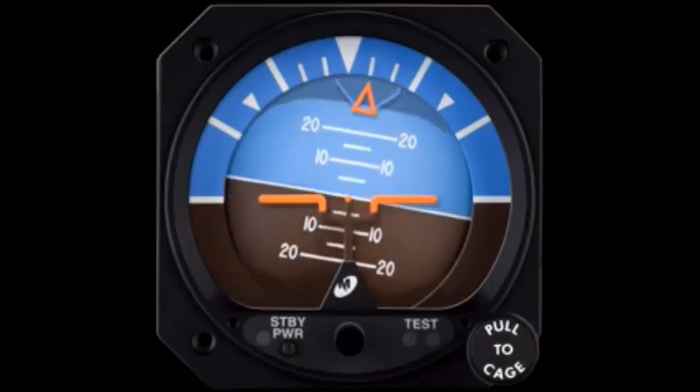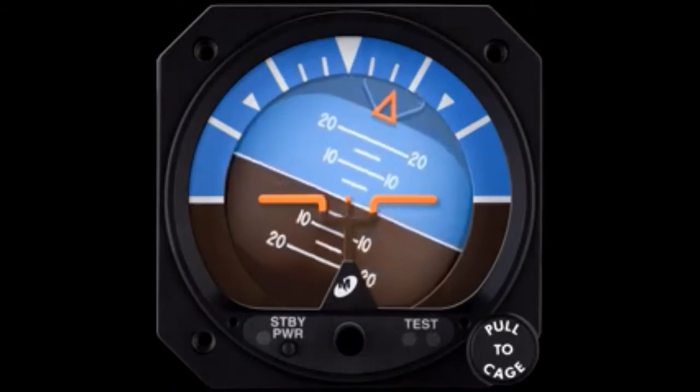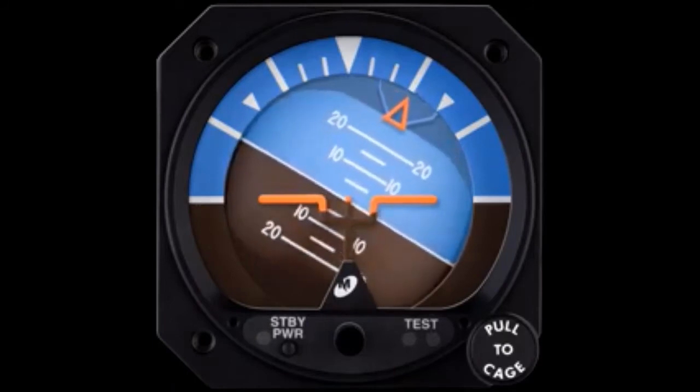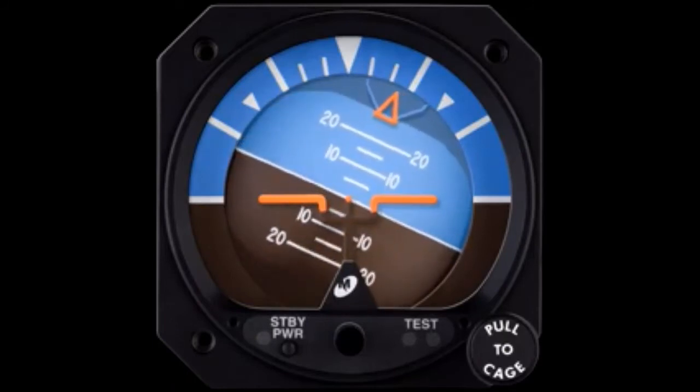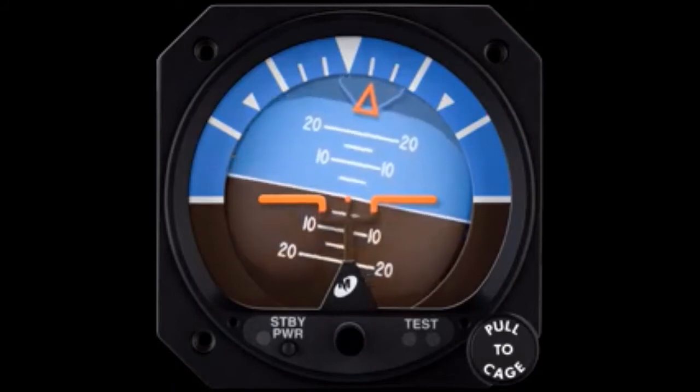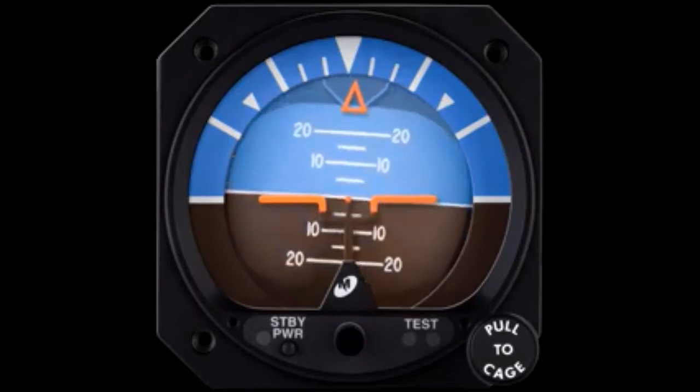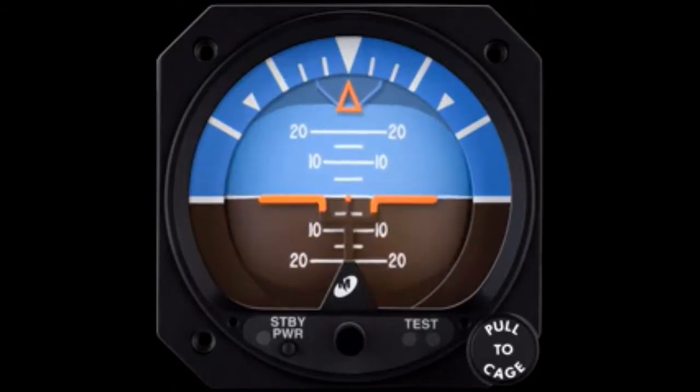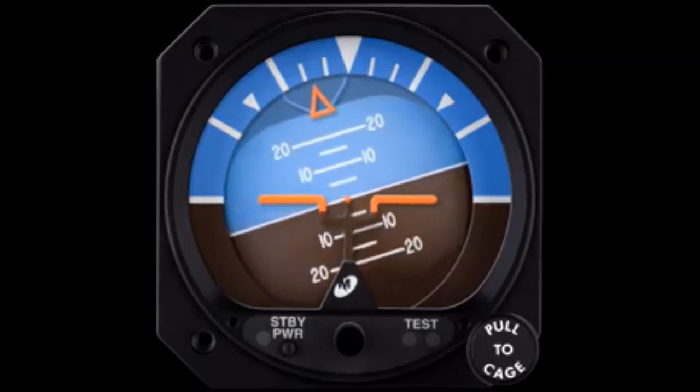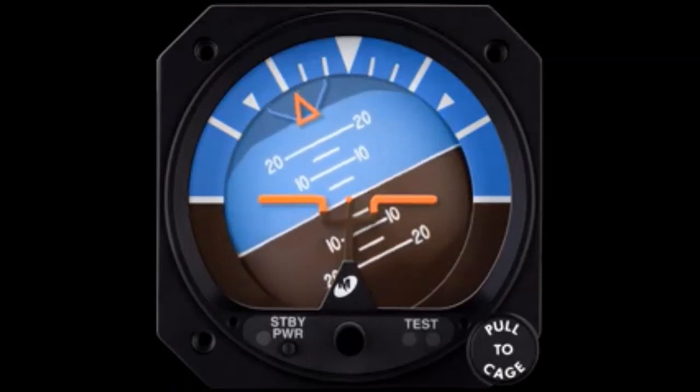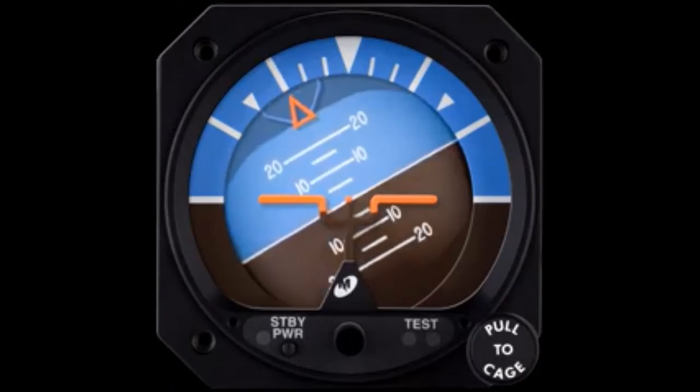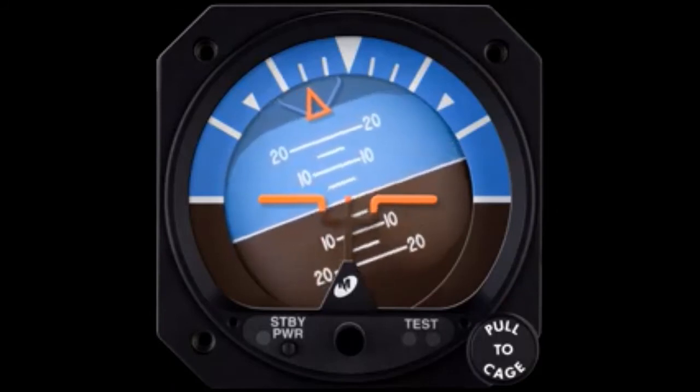Some indicators have what is commonly known as a sky pointer. This simply means that the pointer will always point towards the sky. This can be a little confusing when you first start to use one as it seems backwards from the traditional pointer. If you ever run across one of these, just remember to use the airplane representation for your bank and only pay attention to that pointer for the precision of your bank angle once you are established.